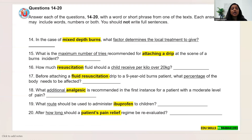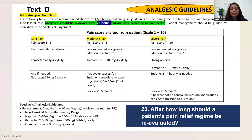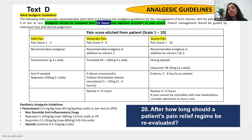Question 20: 'After how long should the patient's pain relief regime be re-evaluated?' From Text D. The text says: 'should be reviewed after 72 hours and adjusted according to pain score.' Re-evaluated here means reviewed. The answer is: 72 hours. Remember to write the percentage symbol for percentage answers.